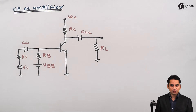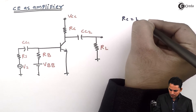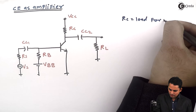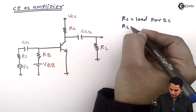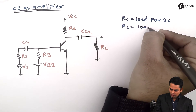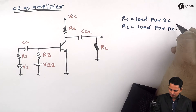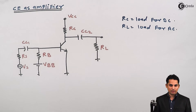This circuit diagram consists of a common emitter amplifier in which RC is the load for DC analysis, whereas RL is the load for AC analysis. The analysis of this circuit can be classified as DC analysis — that is Part 1 — and AC analysis — that is Part 2.